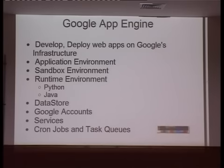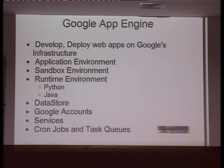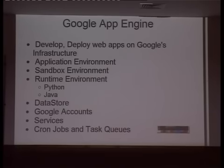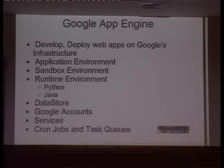App Engine was initially released with a Python runtime environment, and later also released a Java runtime environment. For the Java runtime environment, it's not just Java — it's any language that gets compiled to the Java runtime. We'll be talking about the Python runtime environment here. In the Python runtime environment, pure Python modules are provided — all standard Python modules are inside the App Engine Python runtime. Only pure Python modules are supported; modules with C or C++ bases are not supported. You can also add your own modules as long as they don't violate any standards.